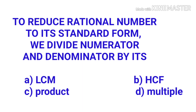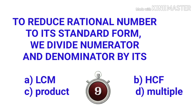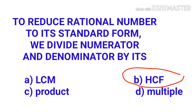To reduce a rational number to its standard form, we divide the numerator and denominator by its HCF — highest common factor.